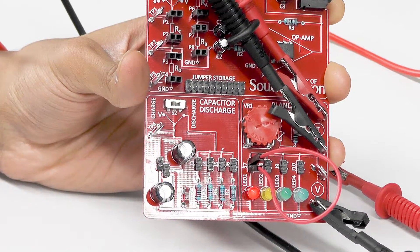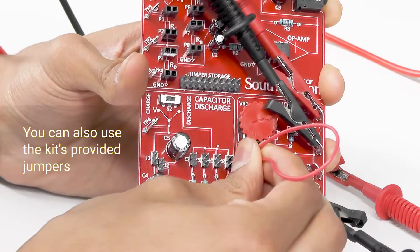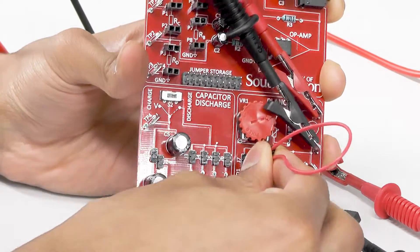We're going to measure these IV characteristics for different colored LEDs. Using your jumper wires, you'll have to take them across and move them to a different color.